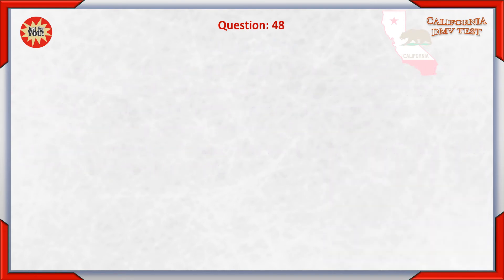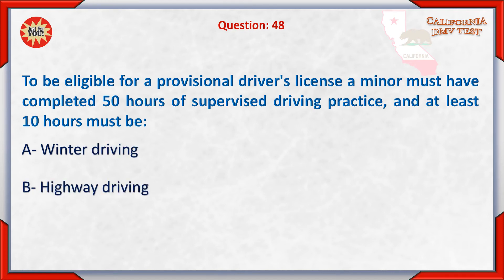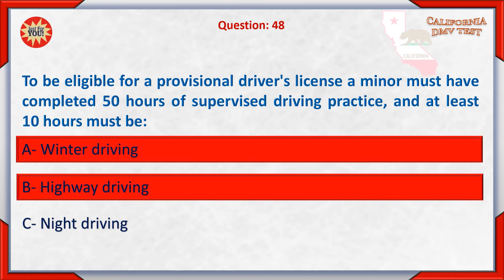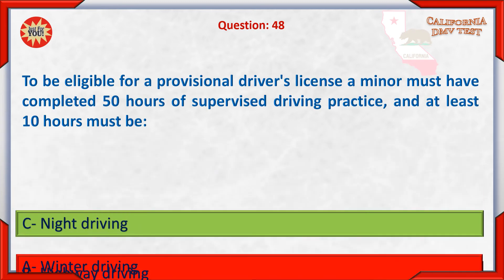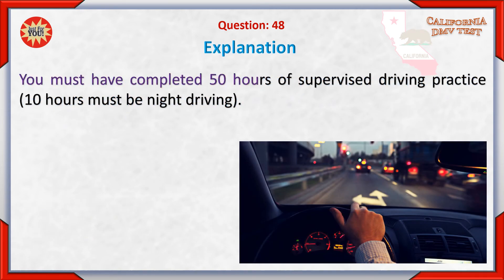Question 48. To be eligible for a provisional driver's license, a minor must have completed 50 hours of supervised driving practice. The options include: A. winter driving, B. highway driving, C. night driving. The correct answer is C — night driving. You must have completed 50 hours of supervised driving practice, and 10 hours must be night driving.